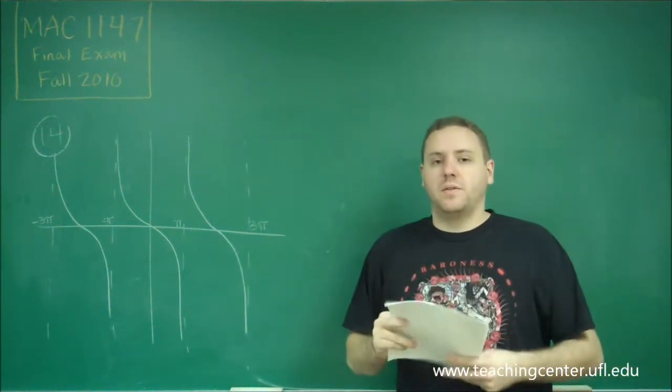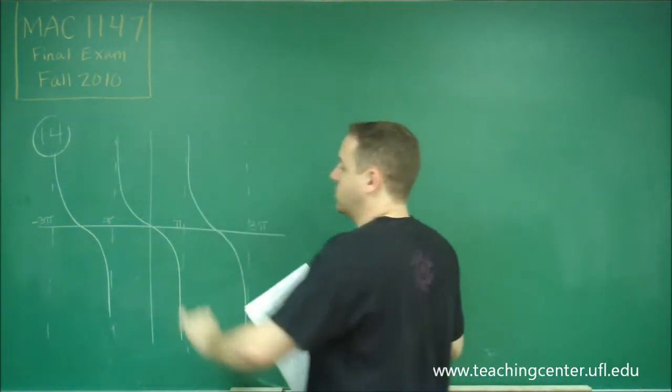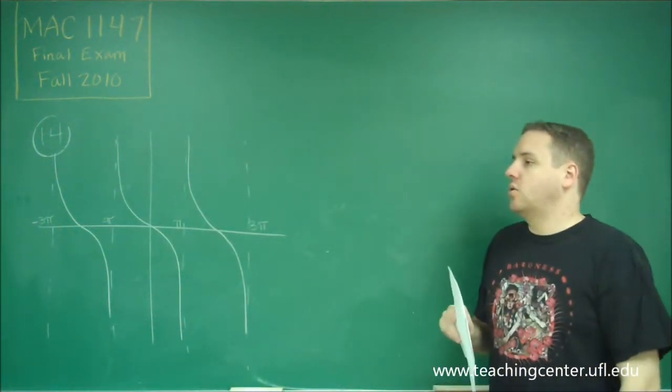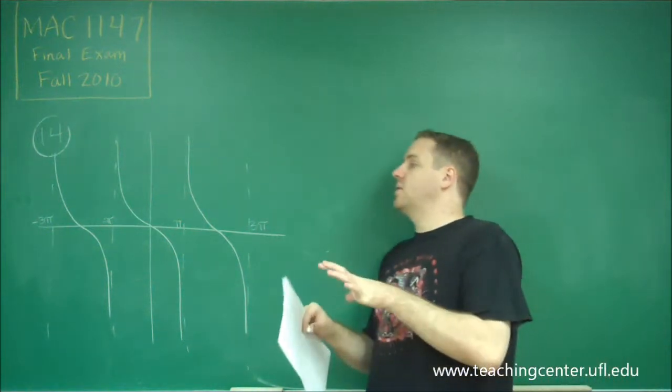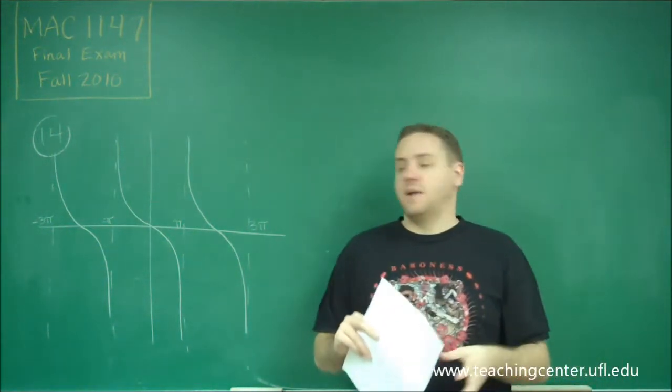There's a couple of things we can tell about this right away. Because it's this shape, downward like that, we know that this is either going to be a cotangent graph or it's going to be a negative tangent graph.